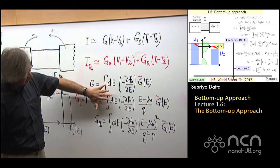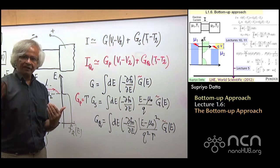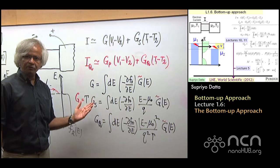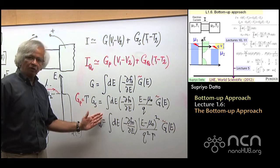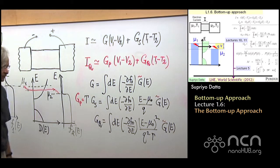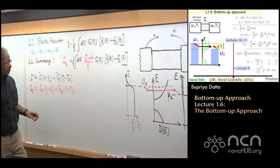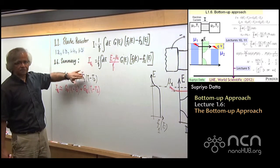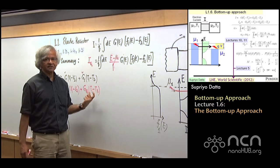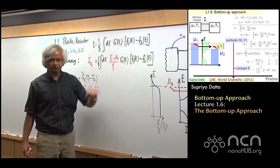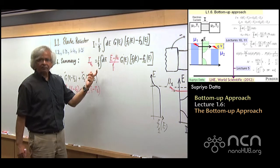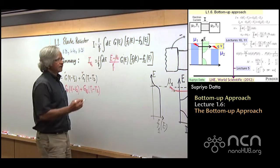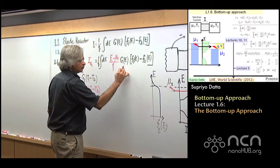These expressions would allow you to connect up to the usual expressions that are normally obtained from the Boltzmann equation, and you'll be hearing more about from Professor Lundstrom next week. How did we get from this expression to this expression? We used a particular approximation for this, f1 minus f2. I'll come to that in a minute.